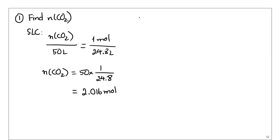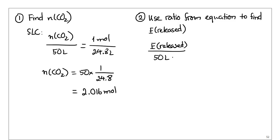And now that I have this, I can use the ratio from equation to find energy released. So again, E released for 50 liters of CO2 is going to be the same. I'm just going to write it here per 50 liters of CO2. It's going to be the same as E released per 2.016 mole of CO2. And this is equivalent to the ratio from the equation, which is 10,108 kilojoules for every 16 mole of CO2.